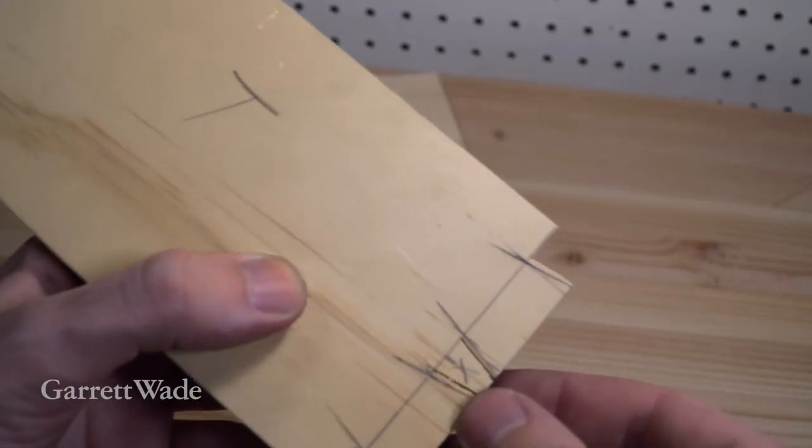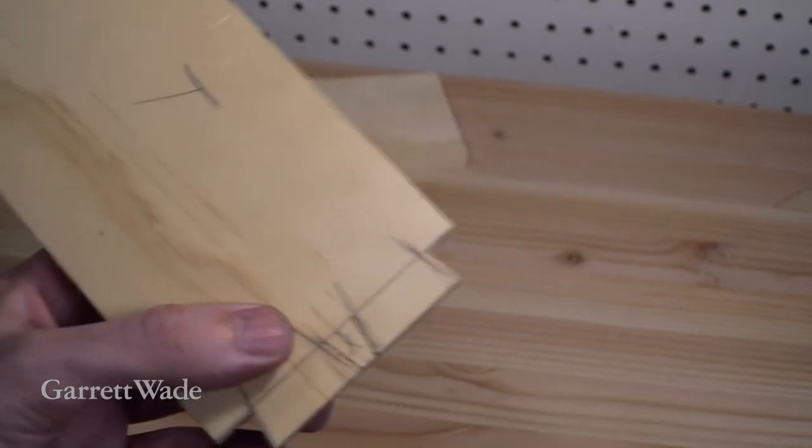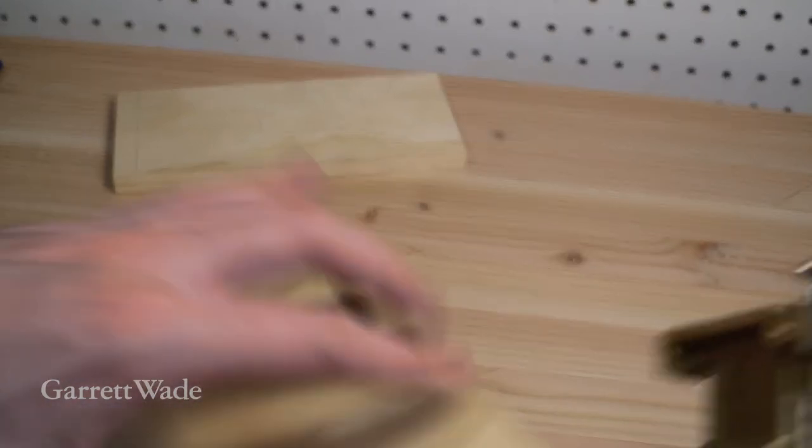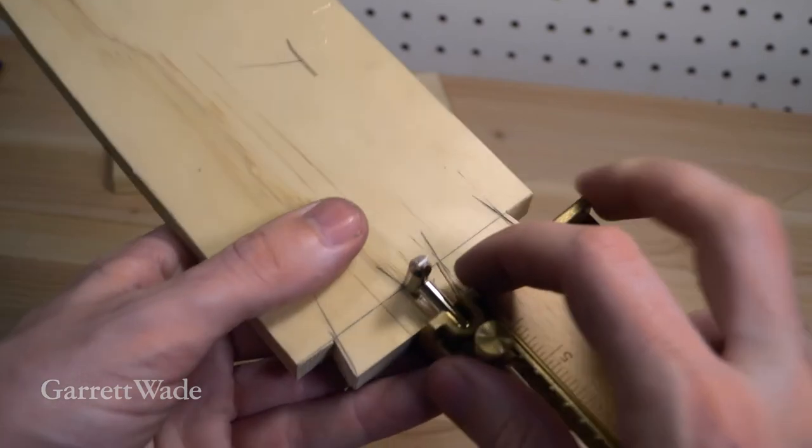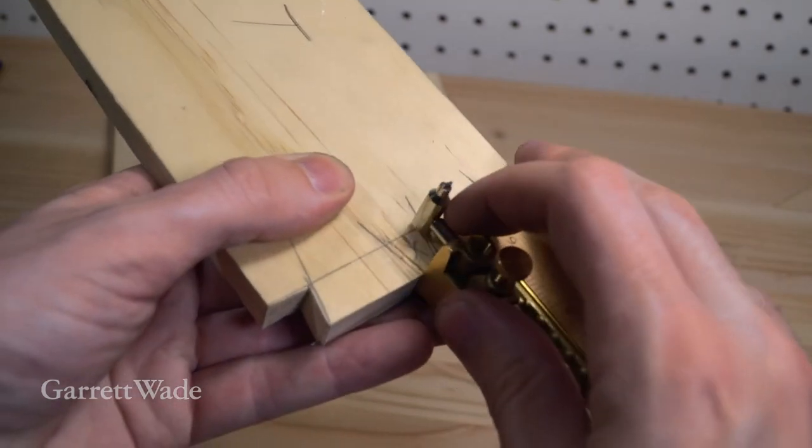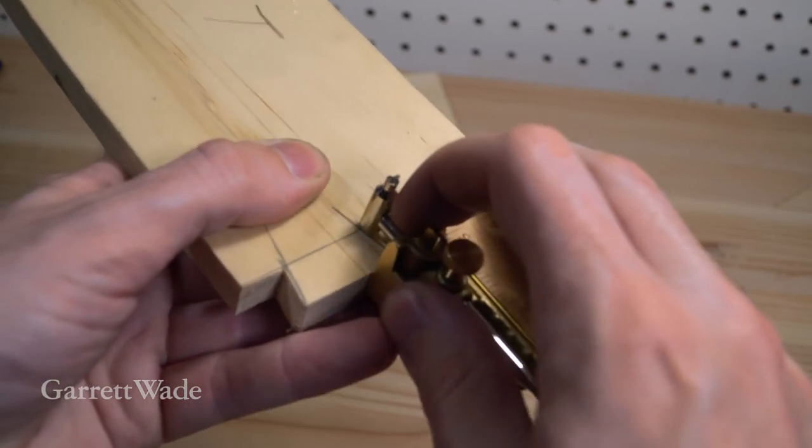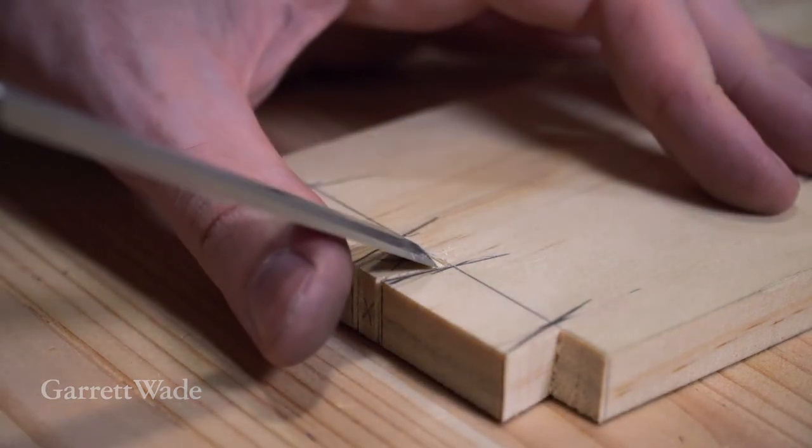So I'm going to remove this section with a chisel. But since this is just a pencil line, I need something to start my chisel with. I've got my odd job scribe point set here. I'm just going to mark where I'm going to remove that material. I have a point here where I can start my chisel.